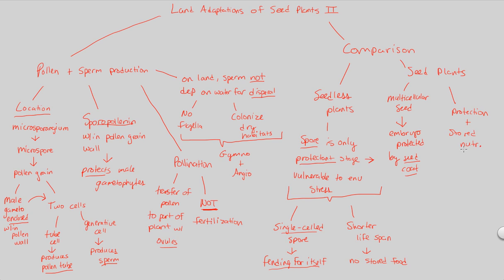Seeds are so successful because nutrients are stored within the seed. These plants can produce seeds that remain dormant — they don't need to germinate and grow fully right away. They can lay low until environmental conditions are perfect for germination, because they have stored nutrients. Stored nutrients mean the seed can stay dormant longer, giving it a longer lifespan as a developing plant. That completes our land adaptations, and now we'll get into the details of gymnosperms and angiosperms and their life cycles.